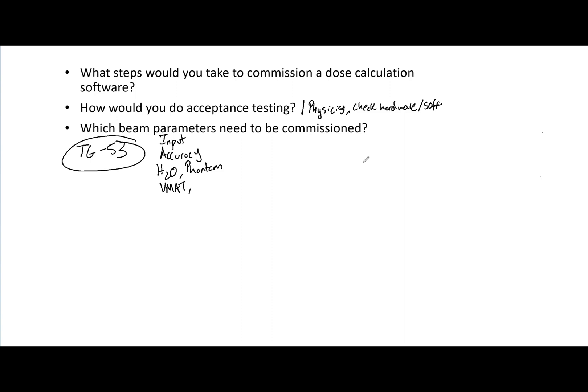Typically this can be done with the vendor — they normally walk you through it — but it could also be done by yourself if you're familiar with it and don't need the vendor. In my clinic, the vendor came to me, showed me all the paperwork, showed me what the expected accuracies should be. We then proved that, and I had to sign papers saying I was there for the acceptance testing and agreed with what they said.